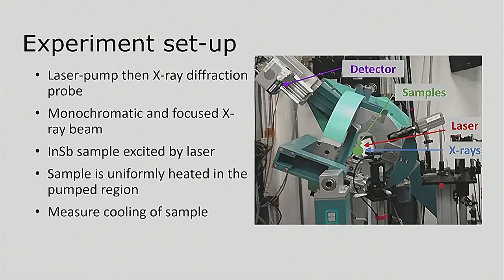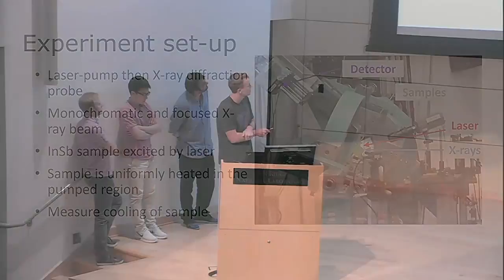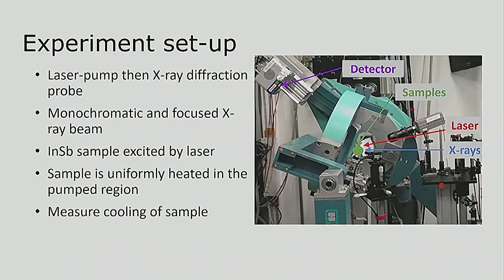So I'm going to talk about the general experiment setup. The general idea is that you have a laser that you shine on your sample. This then heats up the sample, and you can then use x-rays to probe the sample and look at the changes. And the image over here, you can kind of see the sample represented by the green. Your laser comes in, heats up the sample, and then the x-rays probe it, and then the diffracted intensity can be measured with the detector.